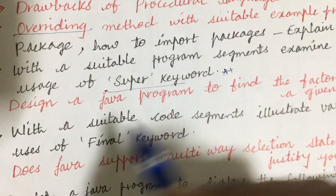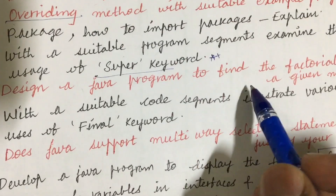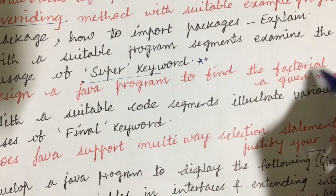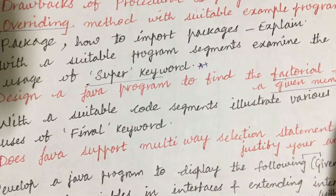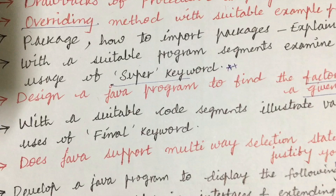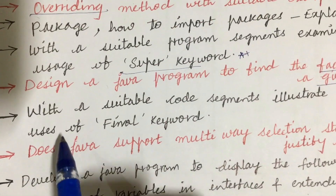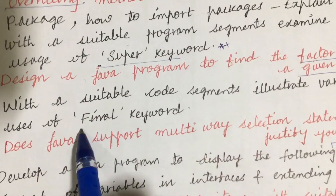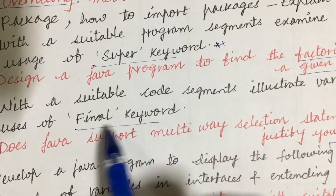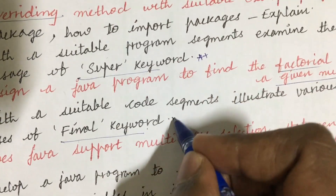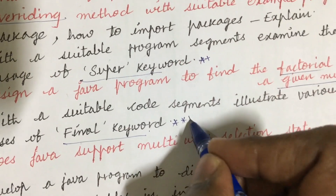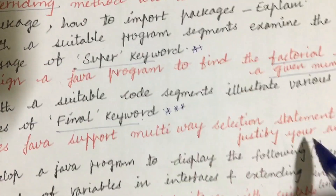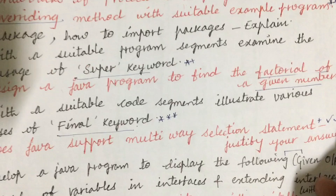Design a Java program to find the factorial of a given number. Based on the program, they may give certain statements and you are supposed to work out the design with suitable code segments. Illustrate various uses of the final keyword. Related to the final keyword or the super keyword, we can expect one question for sure. Does Java support multi-way selection statements? Justify your answer — this may also be asked.